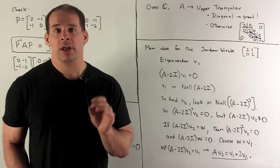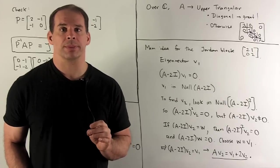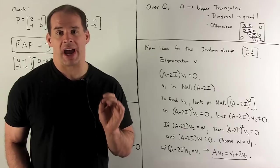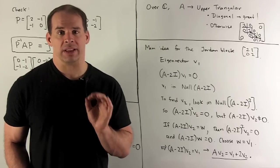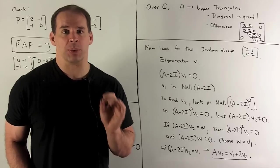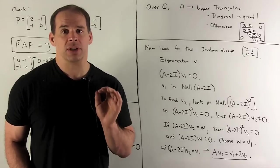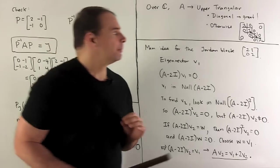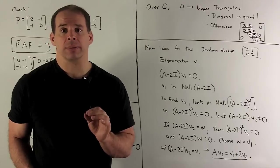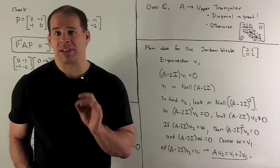In the big picture, suppose we're over the complex numbers. Then, any n-by-n matrix can be put in upper triangular form. If we get lucky, we get diagonal form. If we're not so lucky, we can at least put it in Jordan form. So, that's going to mean block diagonal, the blocks are going to be Jordan blocks, so we're still upper triangular. That's going to be the best that we can hope for.